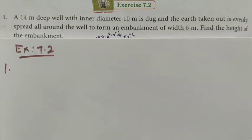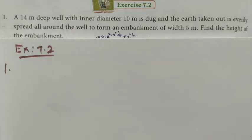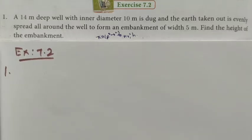Hi students, class 10, exercise 7.2, question number 1. A 14-meter deep well with inner diameter 10 meters is dug, and the earth taken out is evenly spread around the well to form an embankment of width 5 meters. Find the height of the embankment.